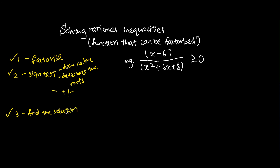That means finding the range of values of x which satisfy the inequality. But we need to take note and emphasize the point that the roots in the denominator should not be included in the answer. So we have this particular question: x minus 6 over x squared plus 6x plus 8, greater or equal to 0.